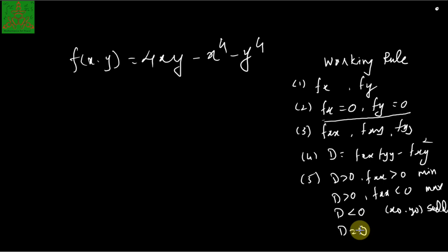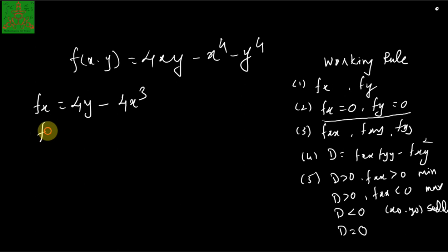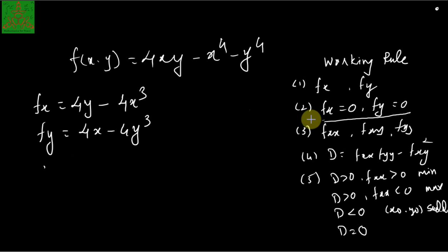Let us start finding the extreme values of this function as well as the saddle points. For the first step, I am calculating fx — the partial derivative of the function with respect to x — which gives 4y minus 4x cubed. And fy is 4x minus 4y cubed.